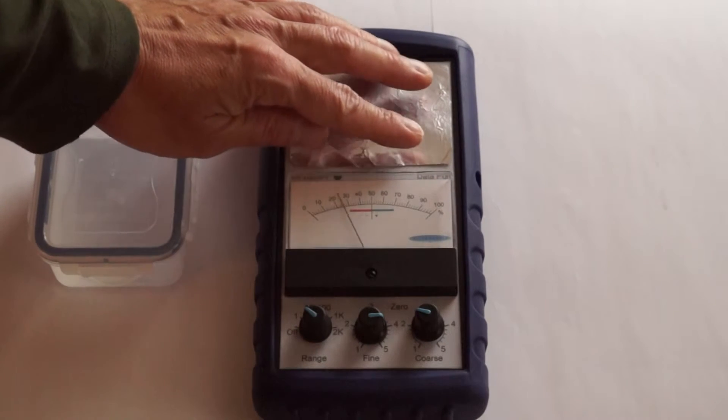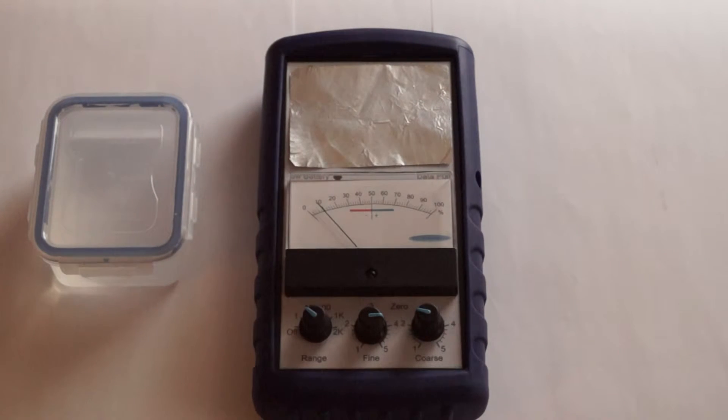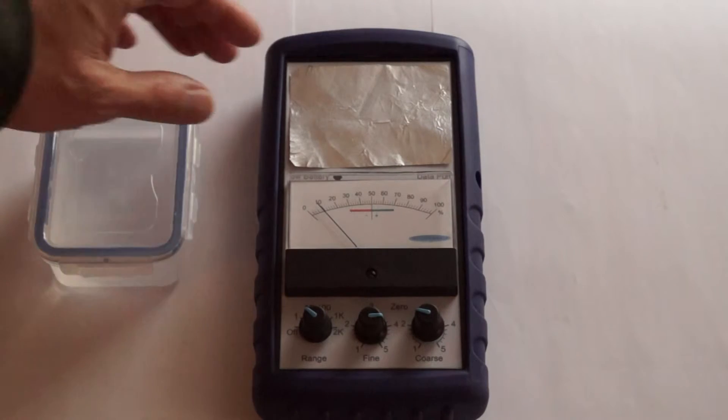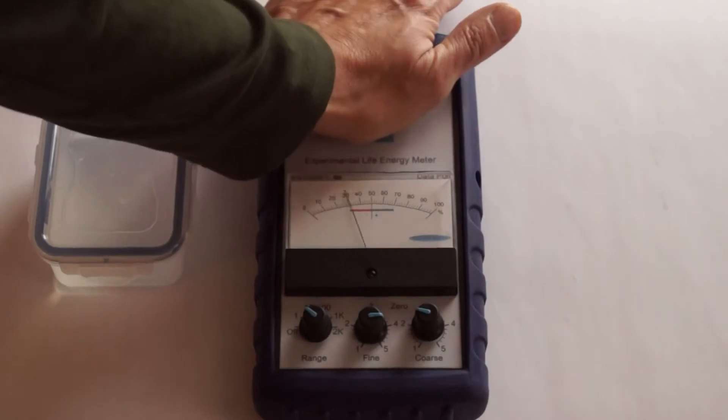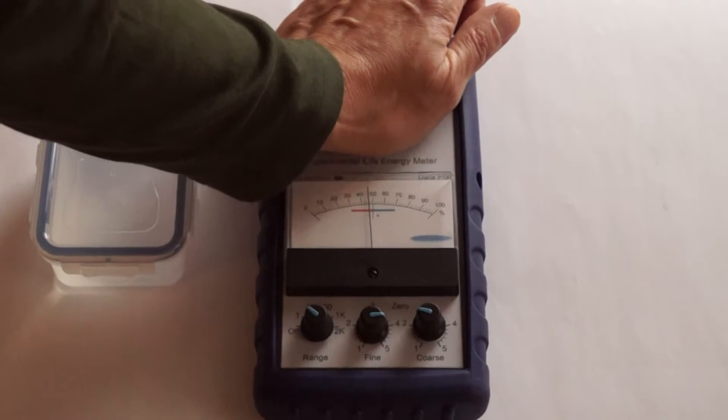First, we test a piece of aluminum foil directly on the experimental life energy meter. The reading is 9 on the x1 scale. The hand reads 48. This is a ratio of 5.